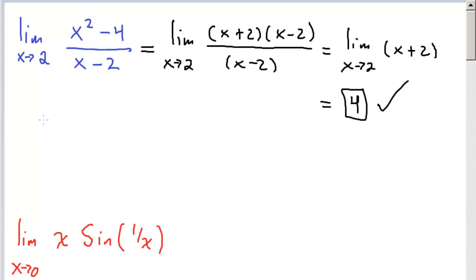However, note that if we evaluate at 2, this function f(2) does not exist because you have 4 minus 4 over 2 minus 2, which is 0 over 0. So keep that in mind—the limit exists, but the function evaluated does not.